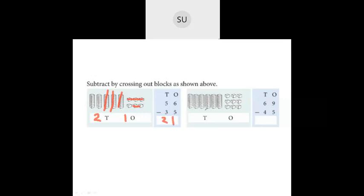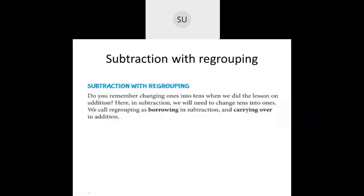For 69 minus 45: we have six tens and nine ones. We take away four tens — 6 minus 4 leaves two tens. From the nine ones we take away five ones — four ones are left. Two tens and four ones is 24, so 69 minus 45 is 24. This is how you do subtraction without regrouping.